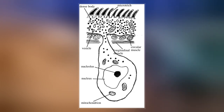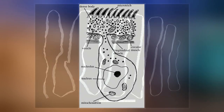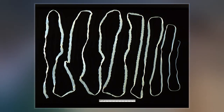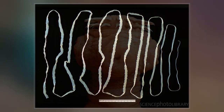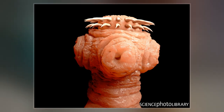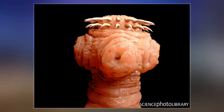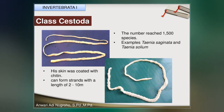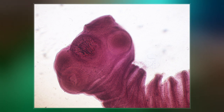All cestodes are parasitic. Many have complex life histories, including a stage in a definitive host in which the adults grow and reproduce, often for years, and one or two intermediate stages in which the larvae develop in other hosts. Typically the adults live in the digestive tracts of vertebrates, while the larvae often live in the bodies of other animals, either vertebrates or invertebrates.